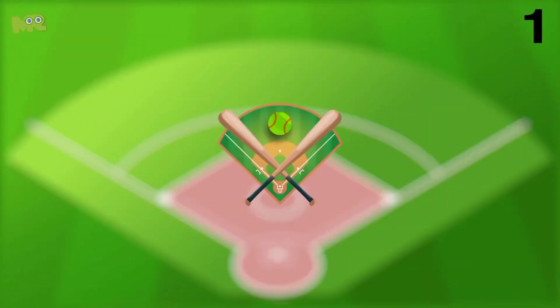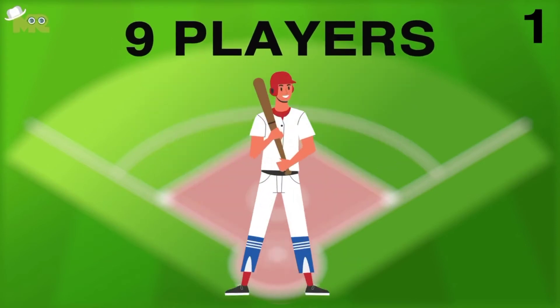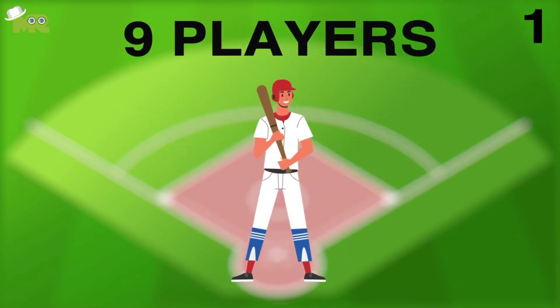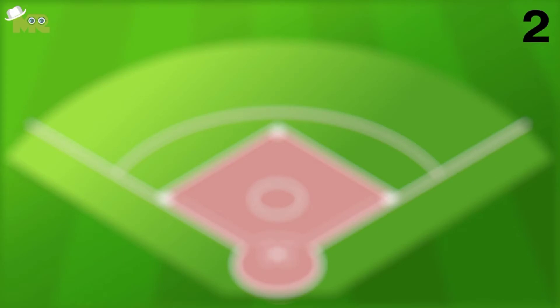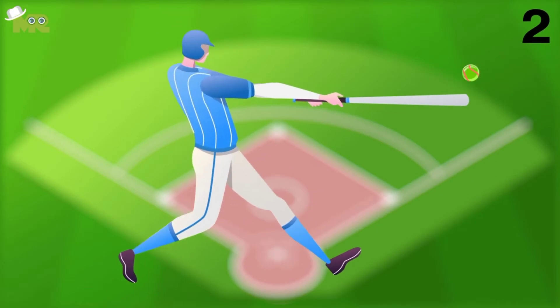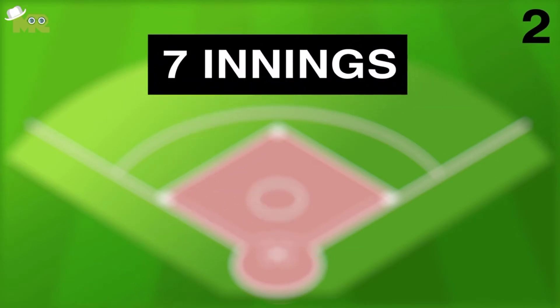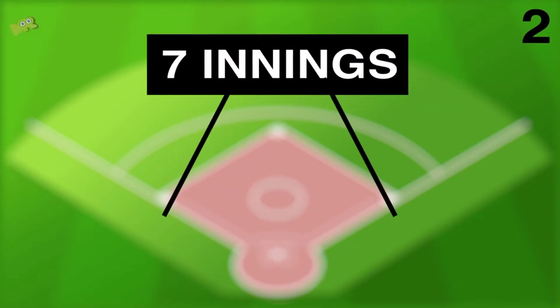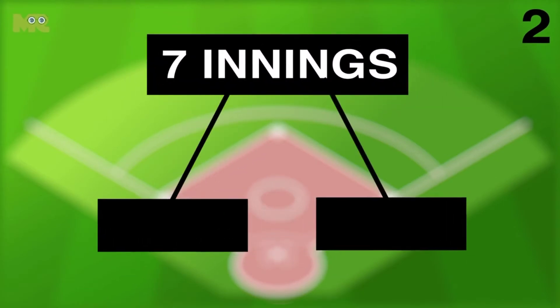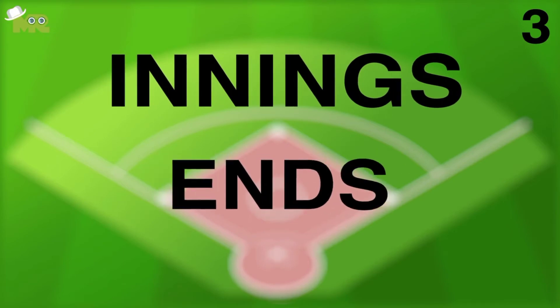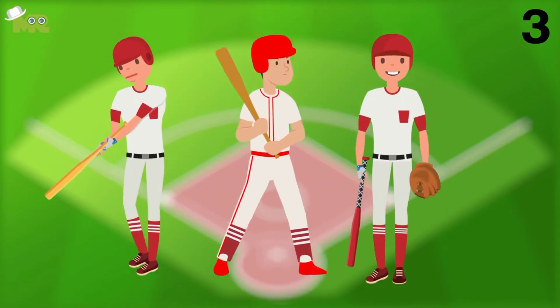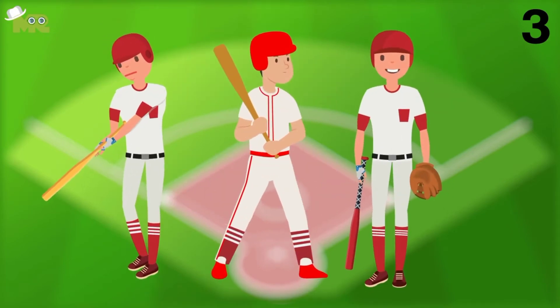Rule 1: In softball, each team consists of 9 players and a team can be mixed gender. Rule 2: The game runs for a total of 7 innings, which are split into 2 sections — the top and the bottom of the innings. Rule 3: Each team's inning ends when 3 of the batters have been called out.